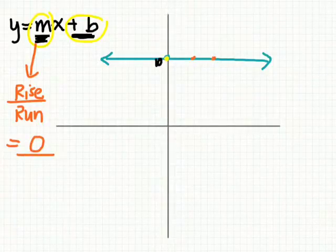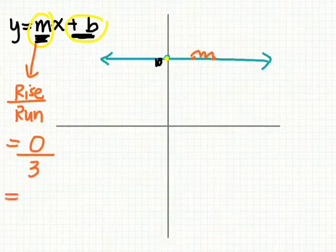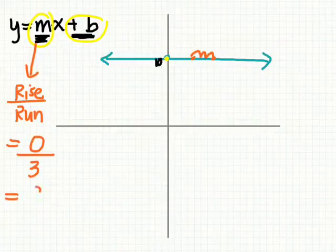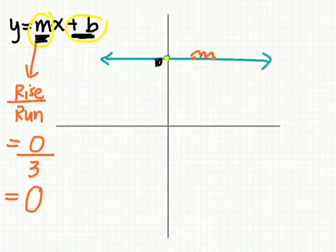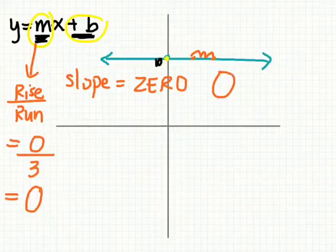And yeah, technically it has a run, right? We can count across. One, two, three in this example. What's zero divided by anything? Zero. So does this mean it's an undefined slope? Well, no, this line here has a slope of zero. The slope is actually zero.